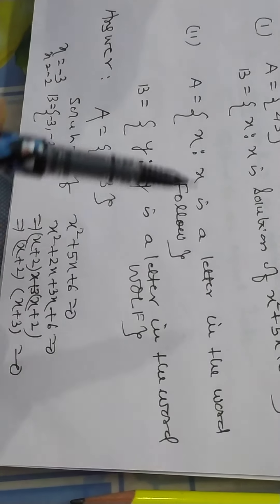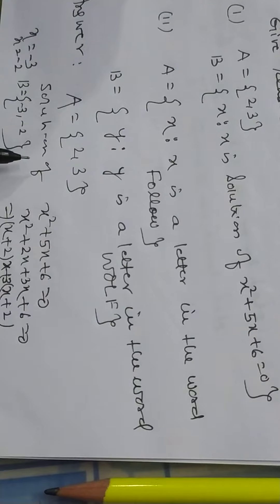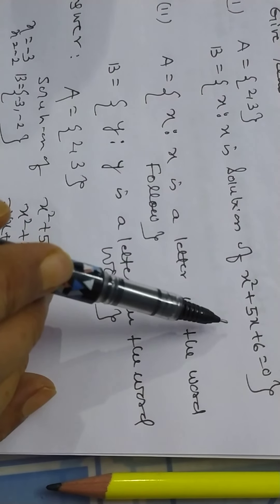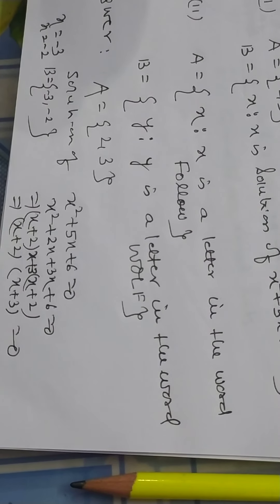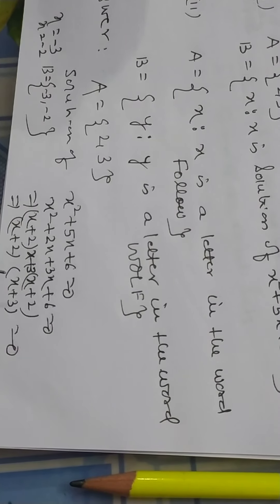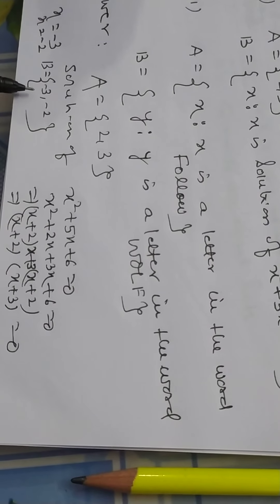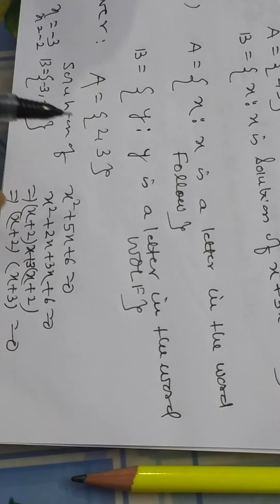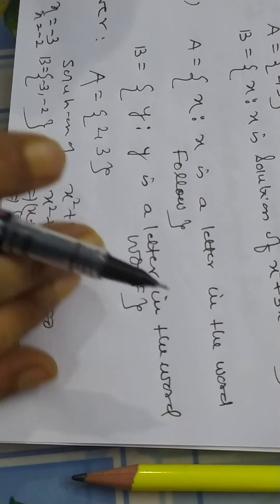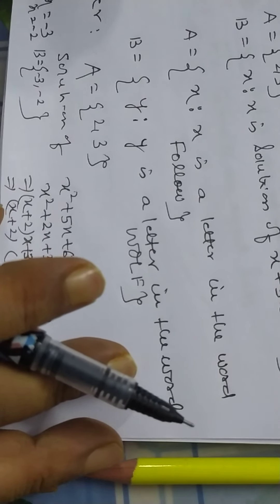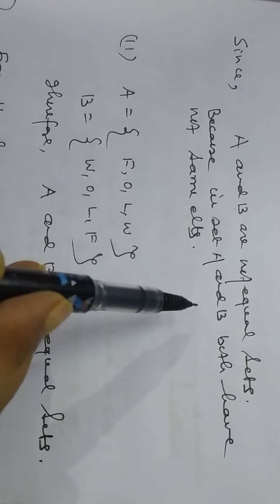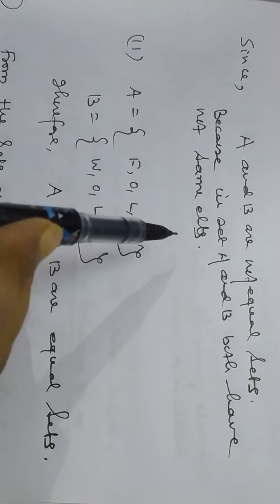So now I want to discuss. In A, 2, 3. But in the set B, we have B is equal to minus 3, minus 2. After taking solution of this equation, we have it has two roots. So what do you observe? A is 2, 3 and B is minus 2, minus 3. So these two sets are not equal. Since A and B are not equal sets because in set A and B both have not same elements.